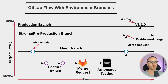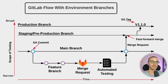In this workflow, the main branch isn't the stable branch — it doesn't contain production code. Instead, you have a branch called production, which represents the production environment in which your code is deployed. The main branch can be considered a staging or pre-production branch, or you can have a dedicated branch for the staging or pre-production environments, like what's shown in this graphic.